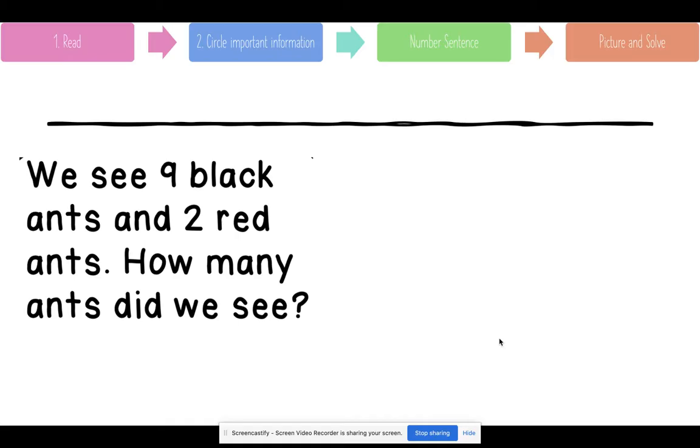One more. Let's read. We see nine black ants and two red ants. How many ants did we see? What is the important information here? Okay. Nine, two, and, and then how many ants did we see? What is your number sentence going to look like?